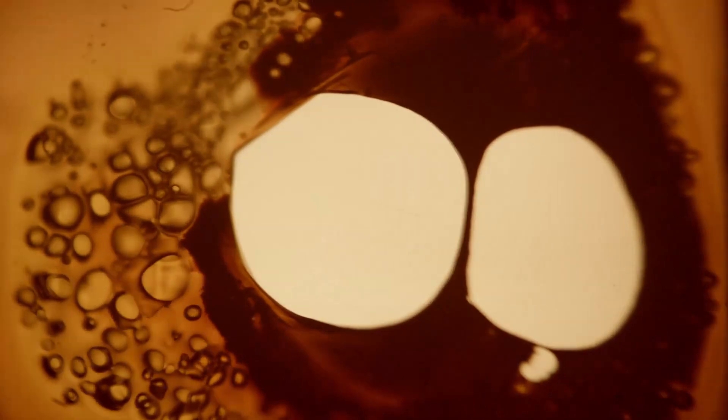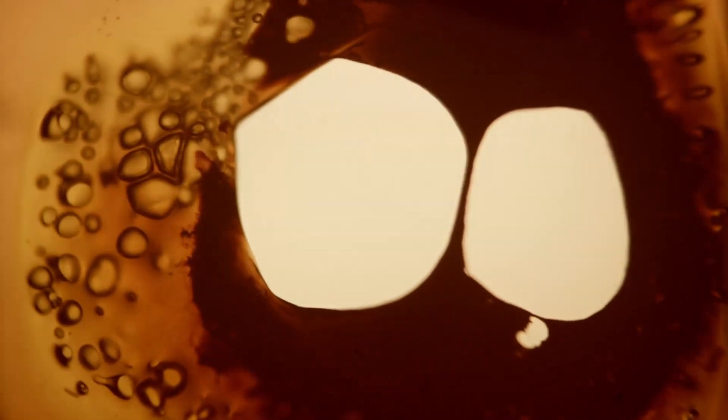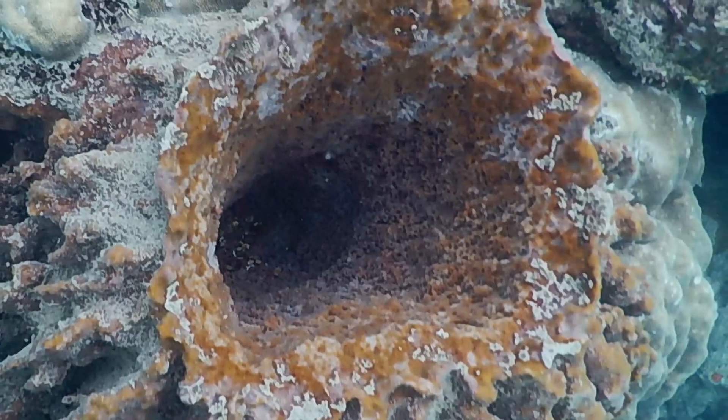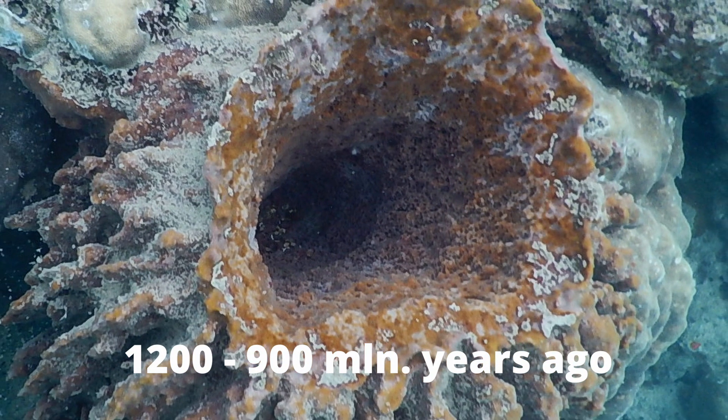No longer was the offspring a mere copy of the parents. And with this, diversity flourished. Over time, a lot of different eukaryotes evolved. Then, some of them started congregating, making multicellular organisms, some 1,200 to 900 million years ago.